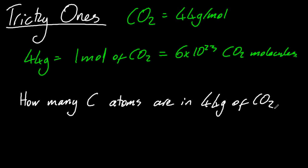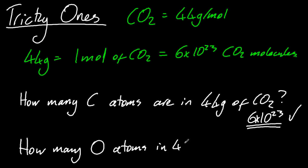So how many carbon atoms in 44 grams of carbon dioxide? Well, it's 6 times 10 to the 23. How many oxygen atoms in 44 grams of carbon dioxide? Well, it's CO2. So for every carbon dioxide, there's two oxygen atoms. So I need to double that.